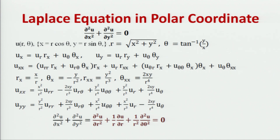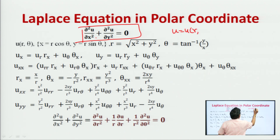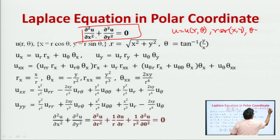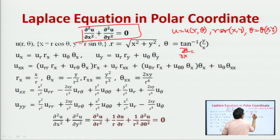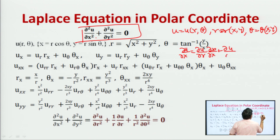In the polar coordinate system: x = r cosθ, y = r sinθ, or r = √(x² + y²). The Cartesian Laplace equation, when converted to polar coordinates, uses partial differentiation where u is a function of r and θ, r is a function of x and y, and θ is a function of x and y. We compute del u/del x = (del u/del r)(del r/del x) + (del u/del θ)(del θ/del x).